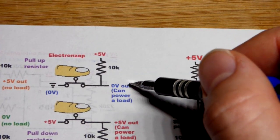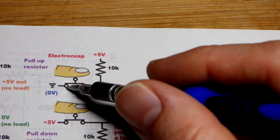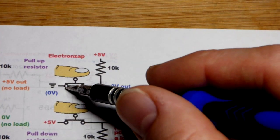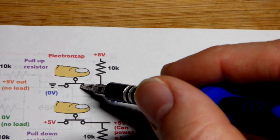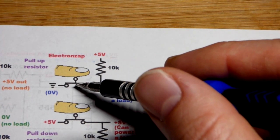Now that could be a load as well. You could have the positive supply come down to ground through a load. And so the load would be what limits the current. It would not be affected by this resistor while the switch is closed.